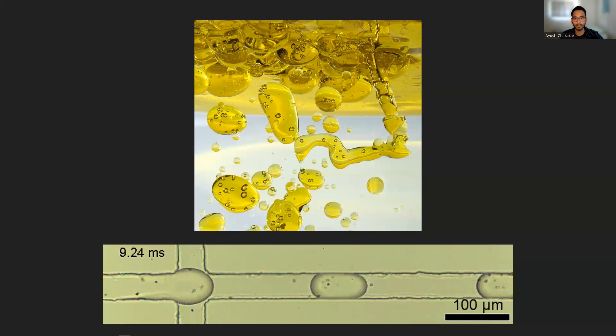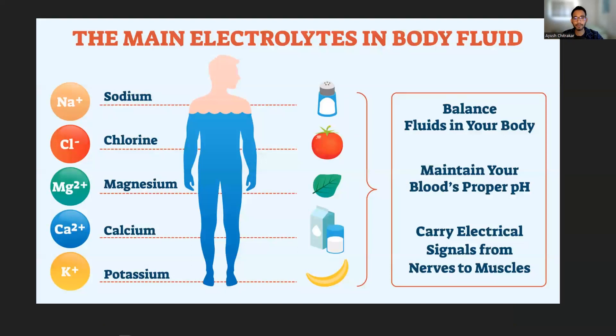So where can we apply this technology? I use droplet microfluidics to measure and detect various electrolytes. Electrolytes are charged atoms that are found within our body that play a vital role in many bodily functions. These electrolytes include potassium, calcium, sodium, and magnesium.